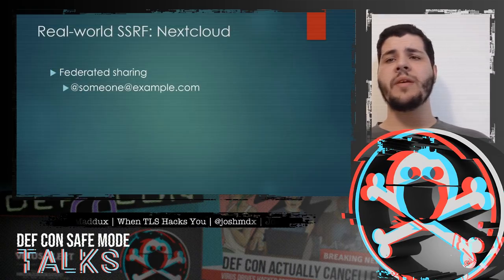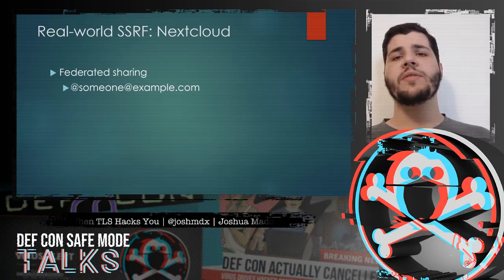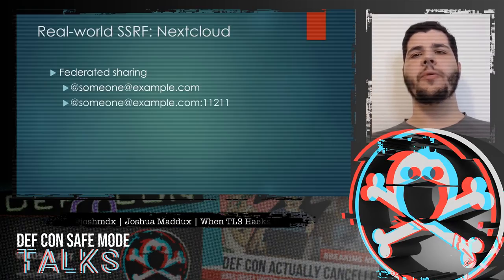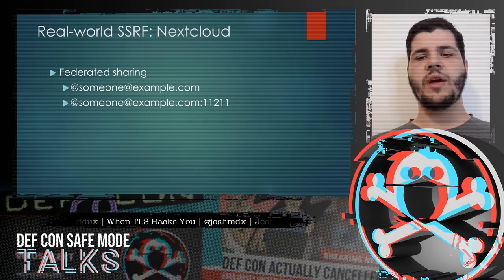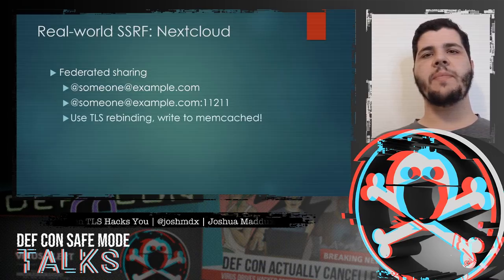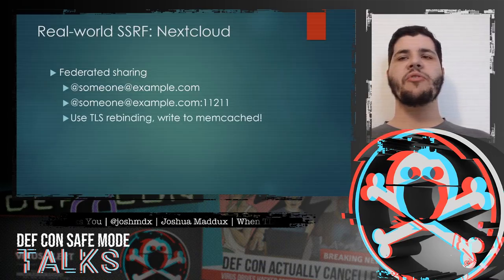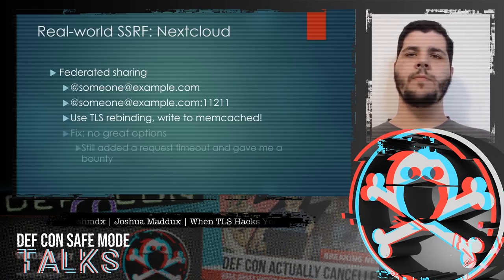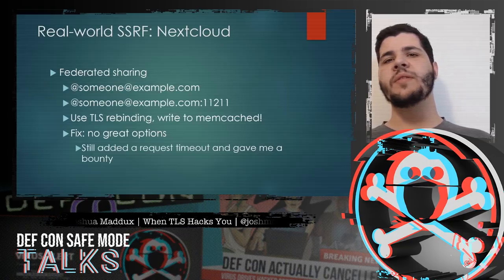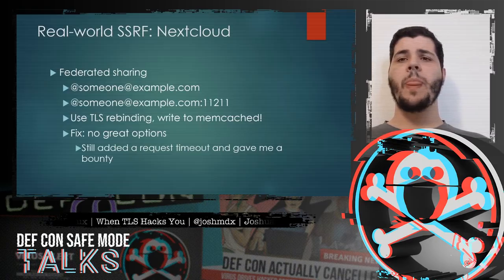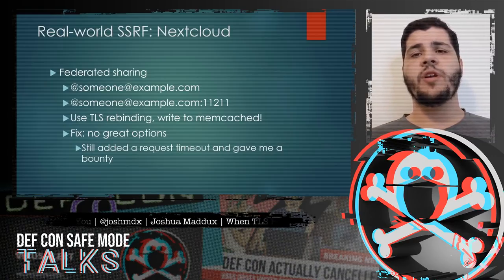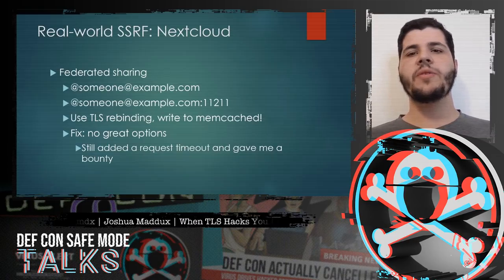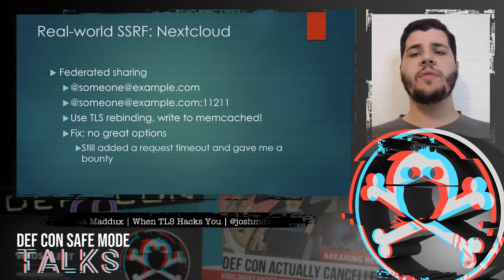Here's the one I reported in Nextcloud. The idea behind Nextcloud is a cool one — you set up a server and host files, and can even share them with other people's servers using a share URL. But as it turns out, you can include port numbers in this share URL. Since Nextcloud automatically puts HTTPS in there, normally there wouldn't be much SSRF potential, and it would have to be blind SSRF. But I was able to do just that — as a non-admin user, I could use my TLS rebinding attack infrastructure to perform arbitrary writes on memcached. After reporting this and working through the options, there weren't any great ones, because not all request libraries allow you to disable TLS sessions. Adding a request timeout made the attack pretty much infeasible. Nextcloud was still generous enough to give me a bounty, even though in my opinion this is libcurl's fault.